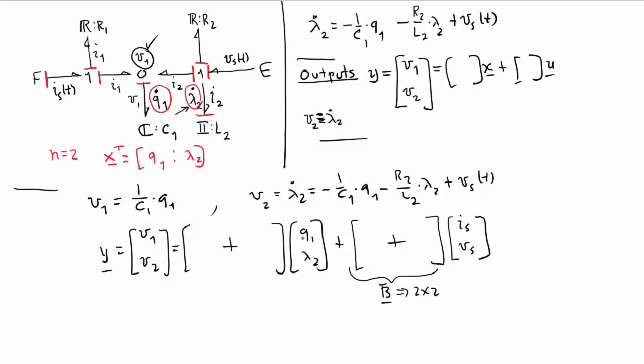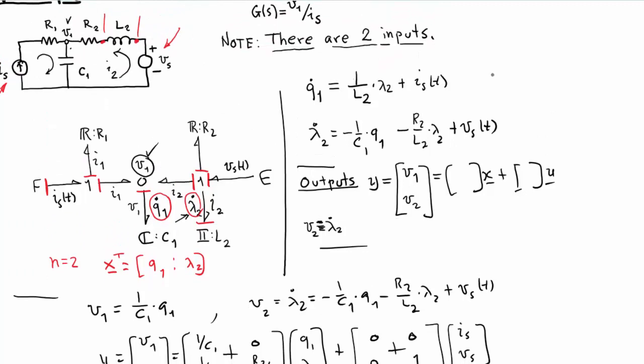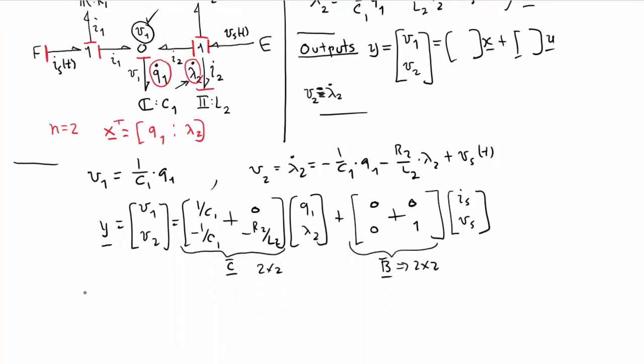Here I have 1 over C1, 0, and here I have minus 1 over C1, minus R2 over L2. The first equation does not depend on Is, so I have two zeros here populating the B. That's 0 and 1 here. So that's going to be my C matrix there, 2 by 2 also. Your A and B matrices would come out of here, and then your C and D would be here. And then you'd go ahead and plug that into your G of S.